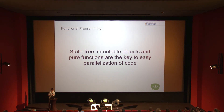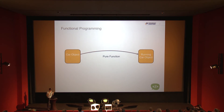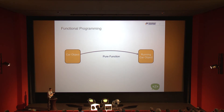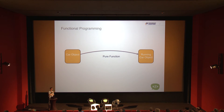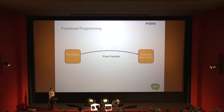Pure function is also a key concept. Here you have your car object and a pure function that transforms it into a running car object. Pure means a couple of things: first, given the same input it always returns the same output — very predictable. It also means no side effects — starting one car should not accidentally shut down another car.